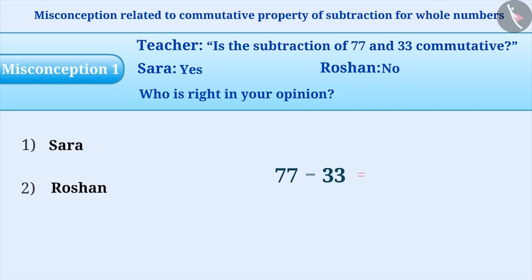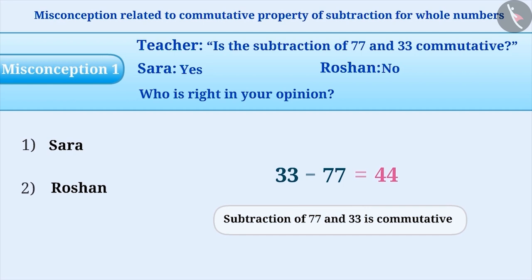77 minus 33 is equal to 44. Students also start thinking that 33 minus 77 is also equal to 44. With this misconception, students think that the subtraction of whole numbers is also commutative. With the same understanding, students think Sara's reply is the correct answer and they choose option 1 as the right answer. This is an incorrect answer.